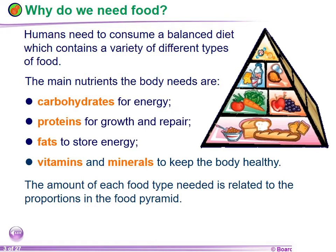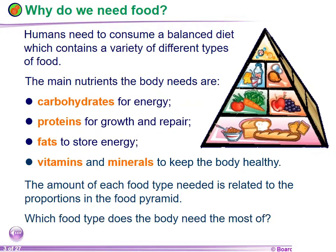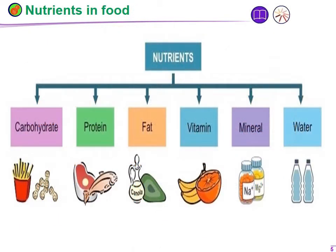The amount of each food type needed is related to the proportions in the food pyramid. Here you can see the food pyramid and which food types you need in what amounts. There is also a chart showing the different nutrients required in your daily life: carbohydrates, proteins found in fish and meat, fats, vitamins in fruits, minerals like sodium and magnesium, and water.